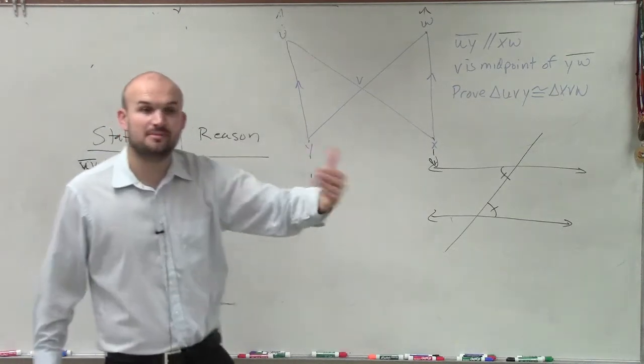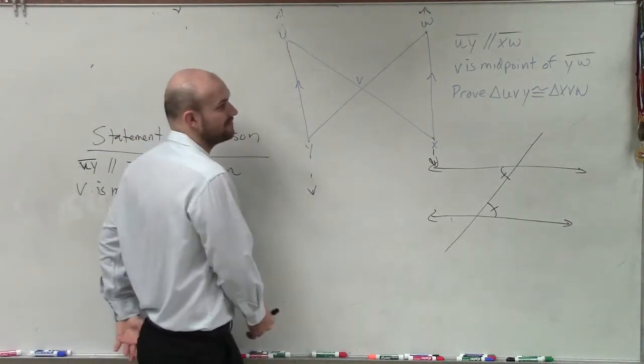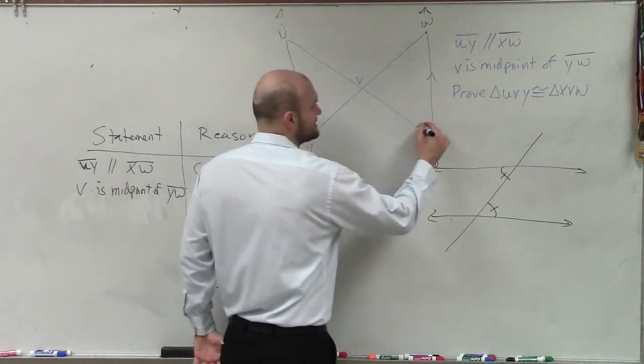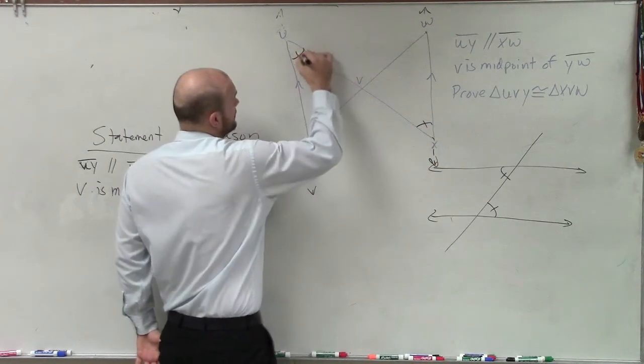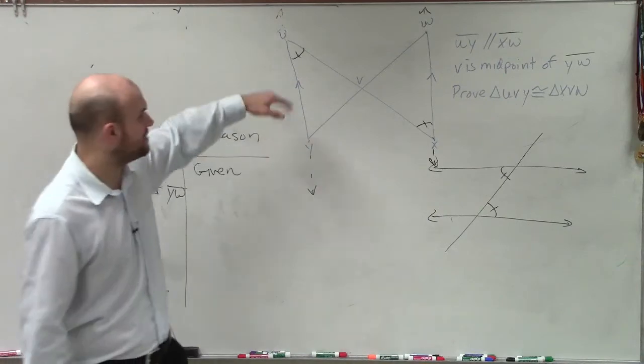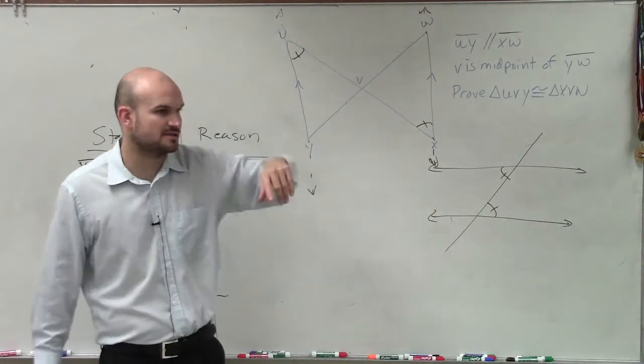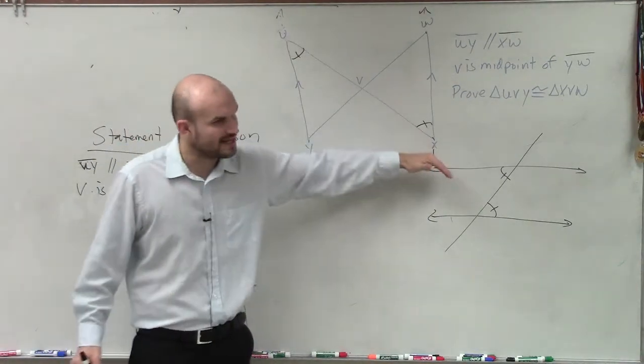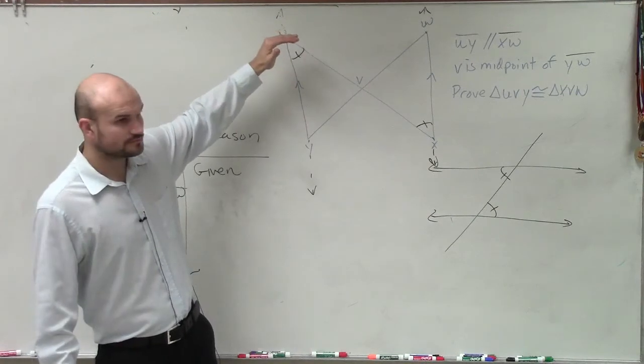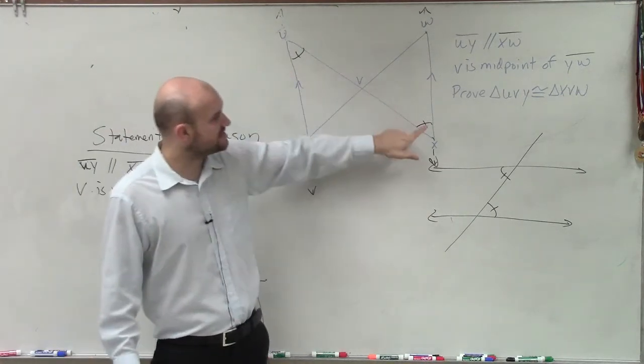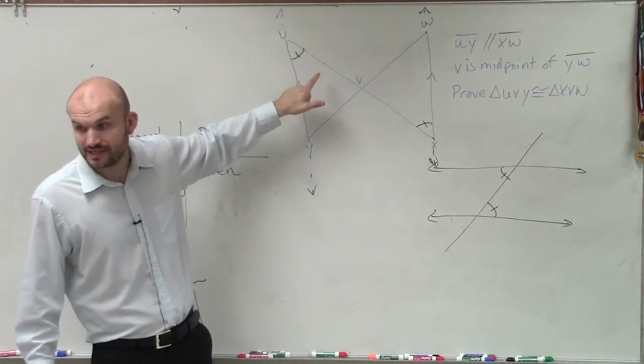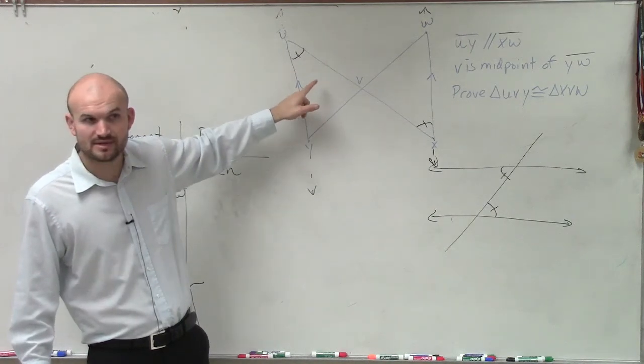So by looking at them and knowing that we have this transversal, I can say that that angle is equal to that angle, right? If you look at them how they relate on that transversal you can just see it right there. How these two angles relate on this transversal, you can see that these are going to be alternate interior angles. Does everybody see that?